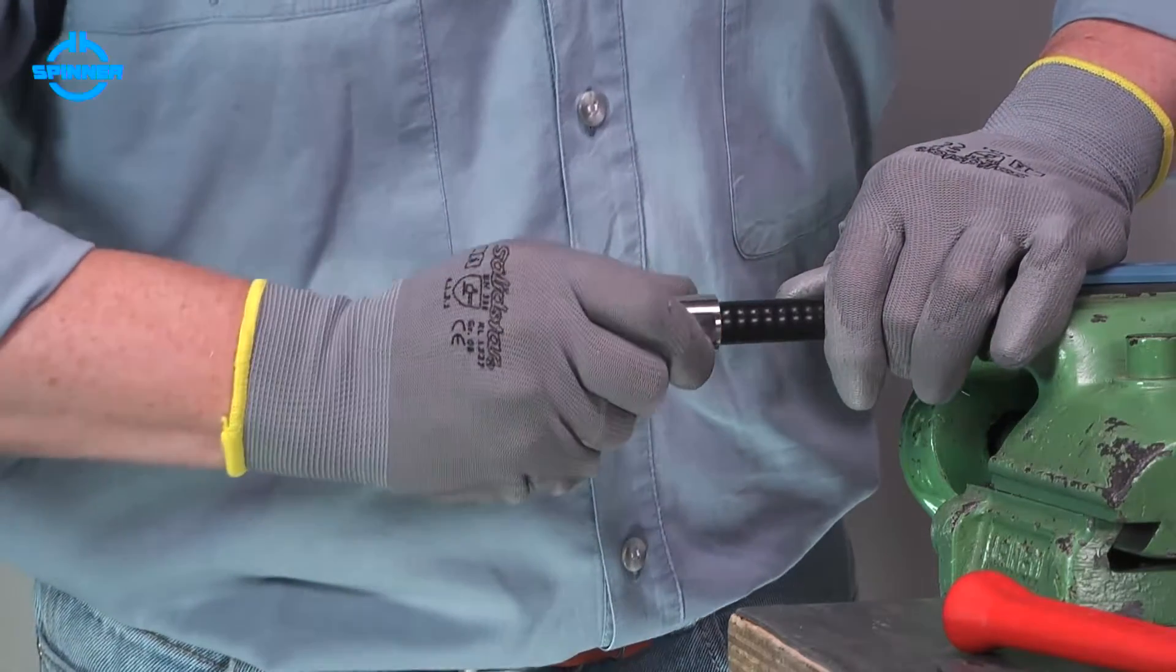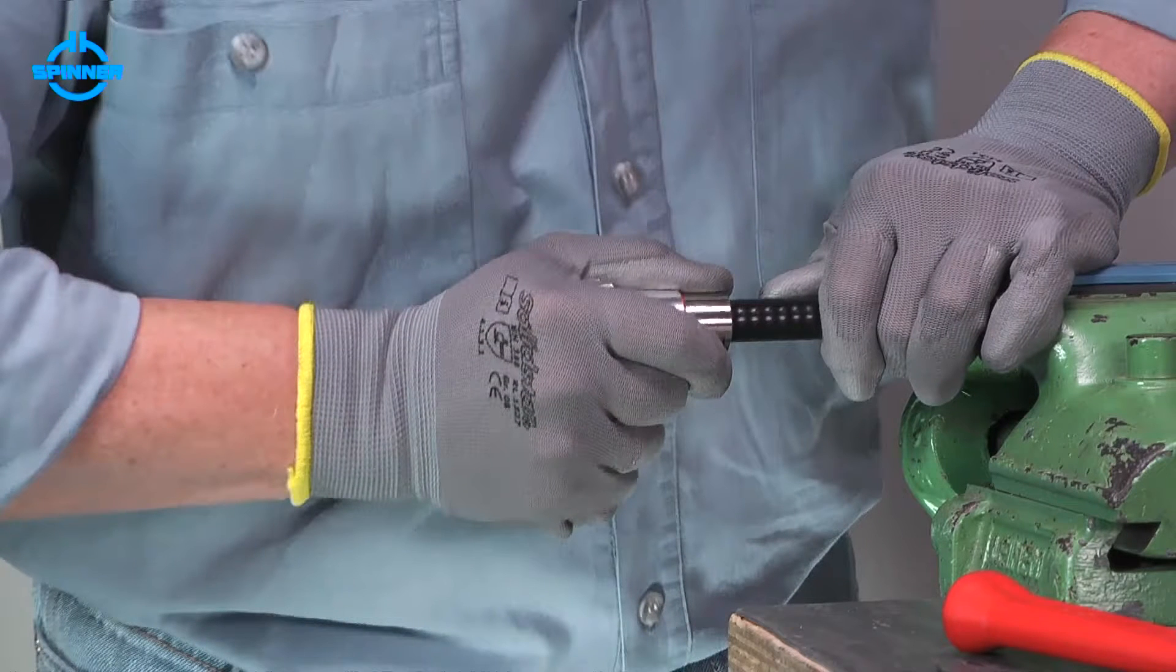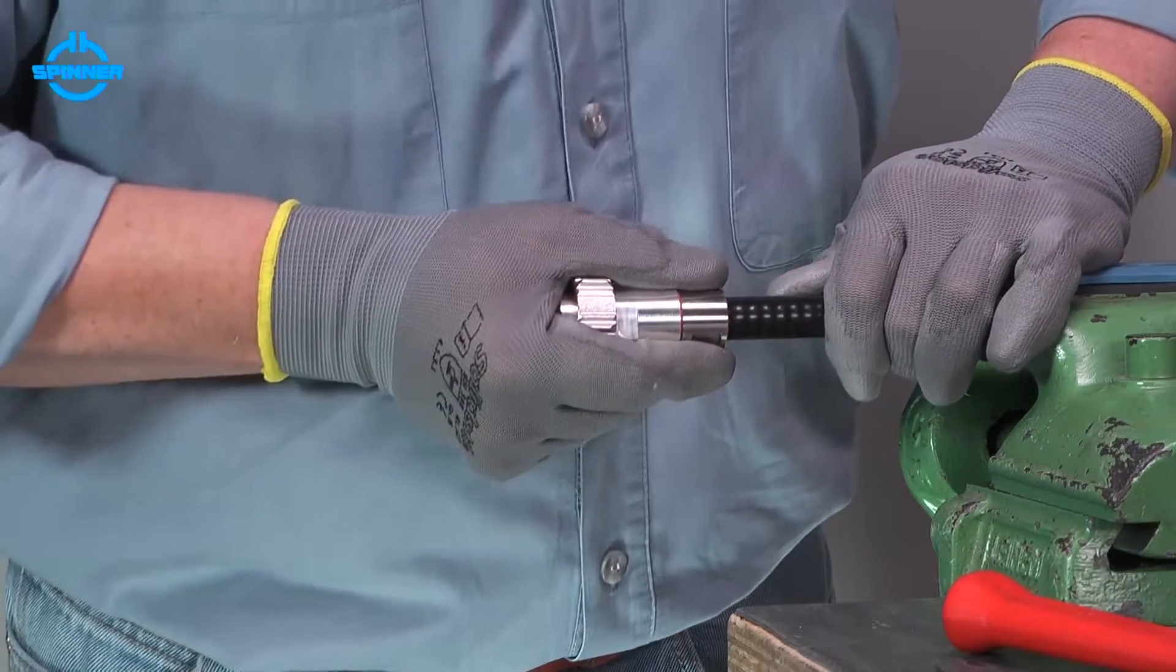Push the entire connector with a slight rotation onto the cable until a click confirms that the connector has snapped over the outer conductor. Now, pull the connector to lock it with the corrugation.